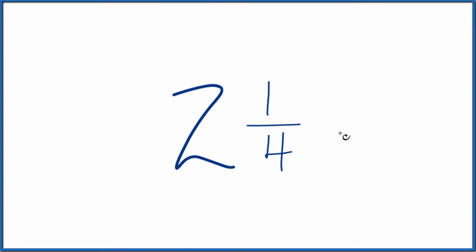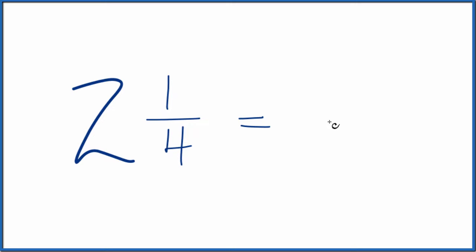When we write an improper fraction, the numerator is going to be larger than the denominator. So here's how we do it. We take two times four, that's eight plus one. That gives us nine. We just bring the four across. And that gives us the improper fraction for two and one-fourths. We have nine-fourths.